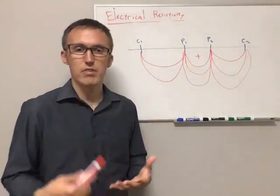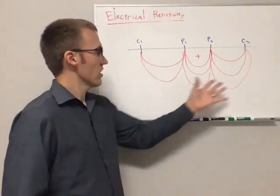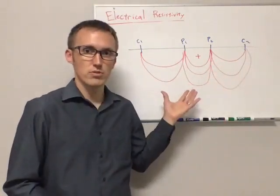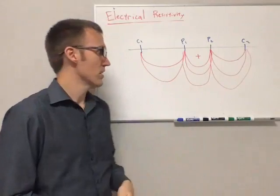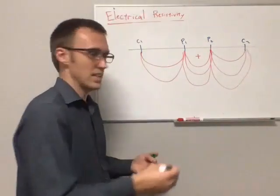it represents something about the average measurement location over a volume which is sampled by the electric current. So if we can draw a box, kind of, it would look something like this.